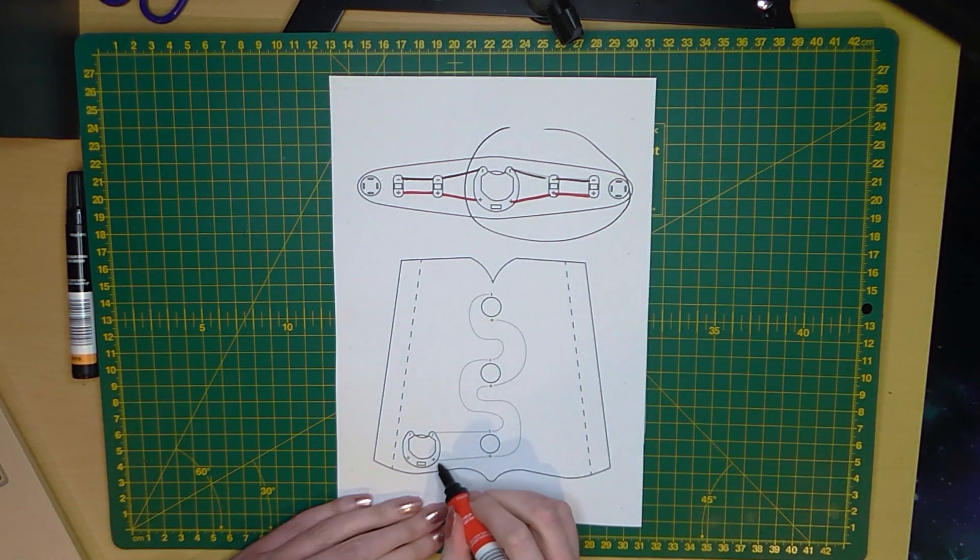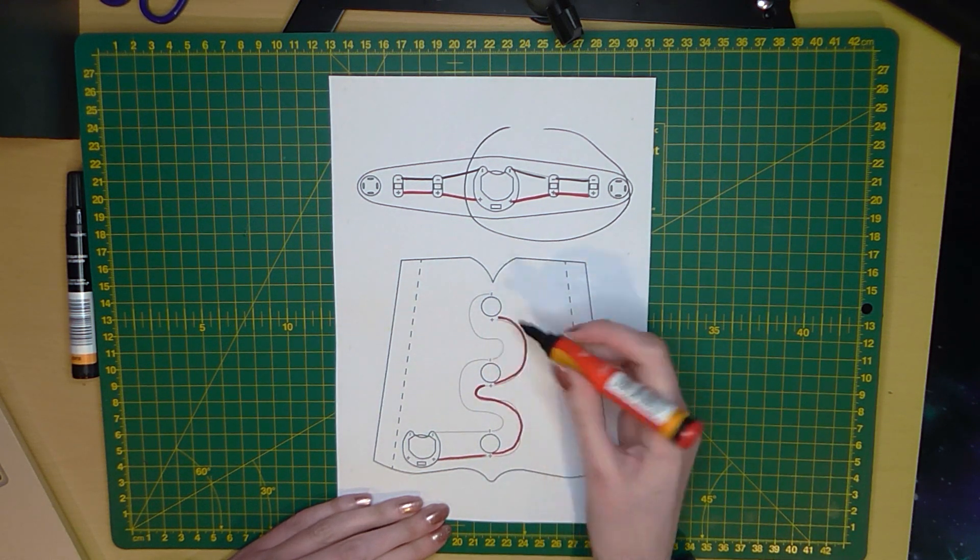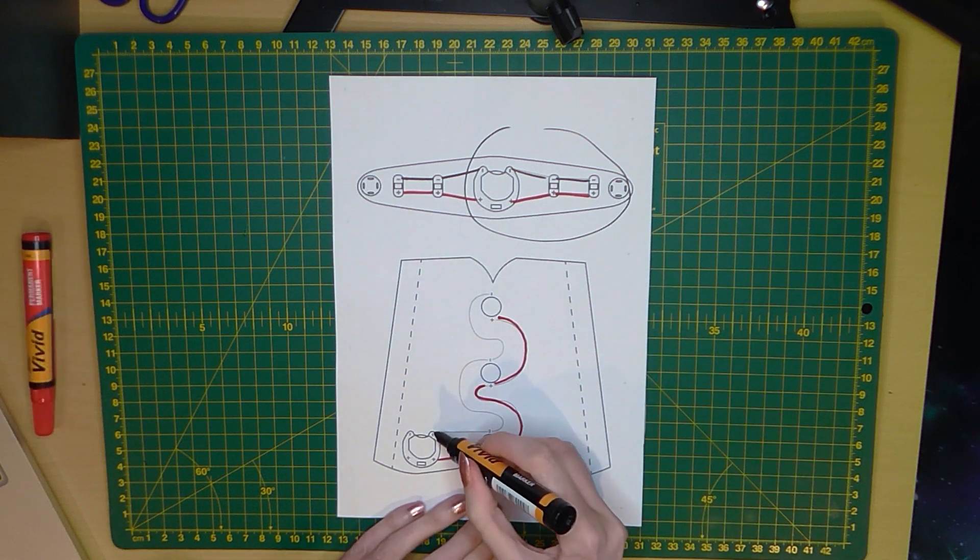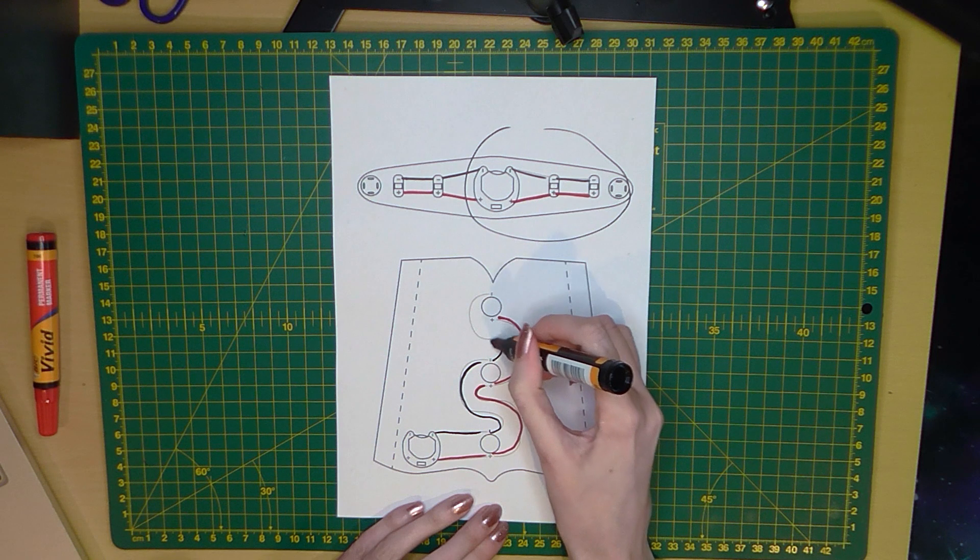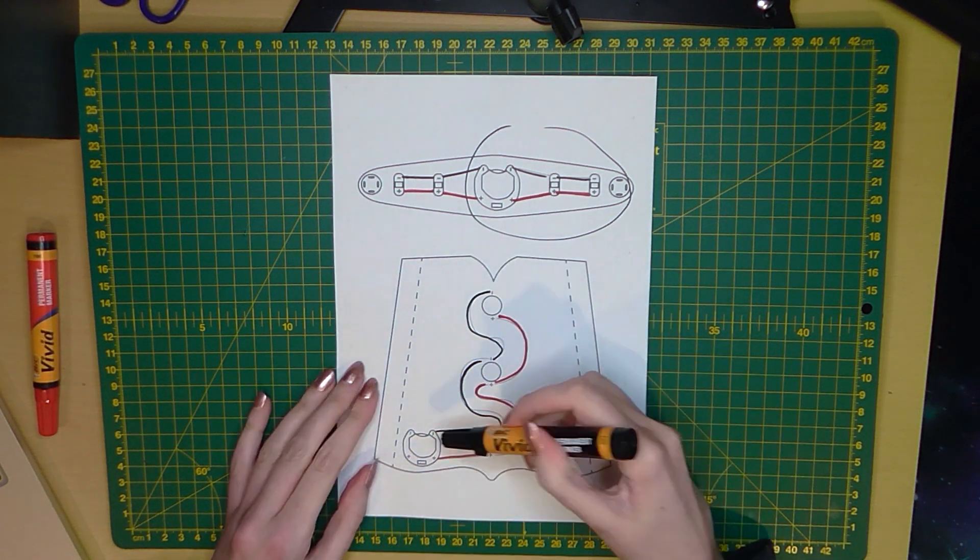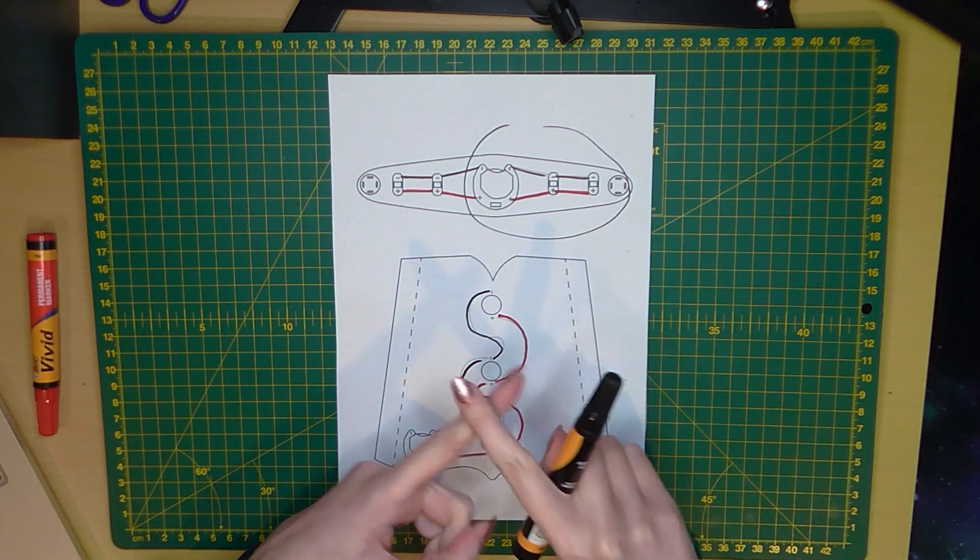So if I draw this in, so positive, positive, positive, then negative, to negative, to negative, to negative. So the lines need to have enough space between them to curve around and they cannot cross over at all.